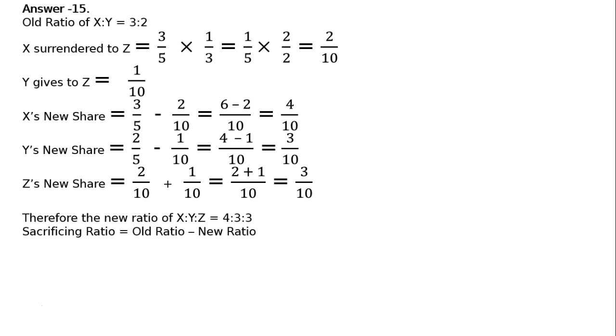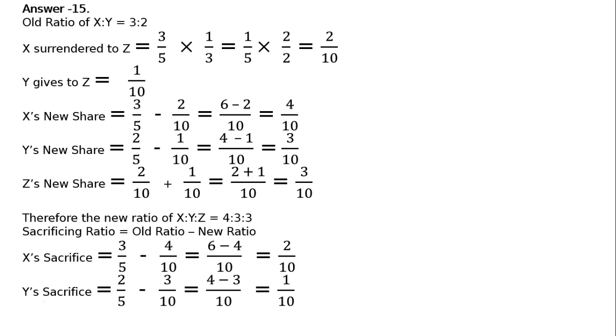Sacrificing ratio is equal to old ratio minus new ratio. X's sacrifice. 3 by 5 minus 4 by 10. LCM 10. That is 3 to the 6 minus 4 is equal to 2 by 10. Y's sacrifice. 2 by 5 minus 3 by 10. That is equal to 4 minus 3 upon 10. That is equal to 1 by 10. Therefore, the sacrificing ratio of X is to Y is equal to 2 is to 1. And this is the final answer. We got new ratio. We got sacrificing ratio.